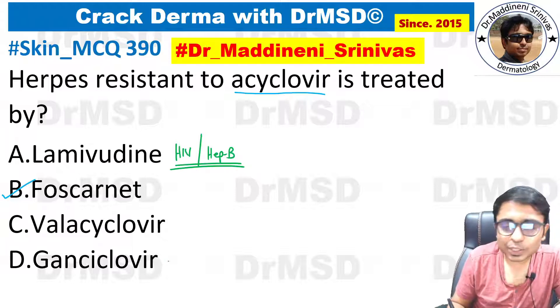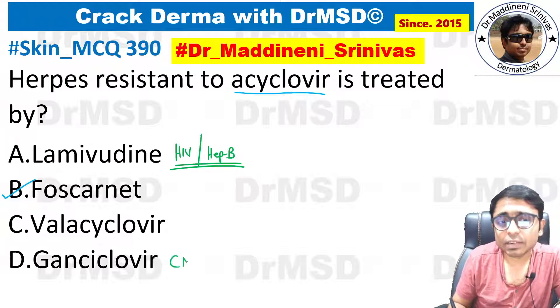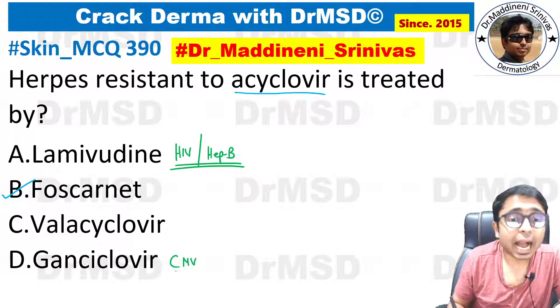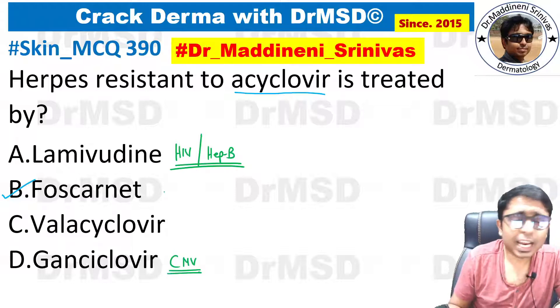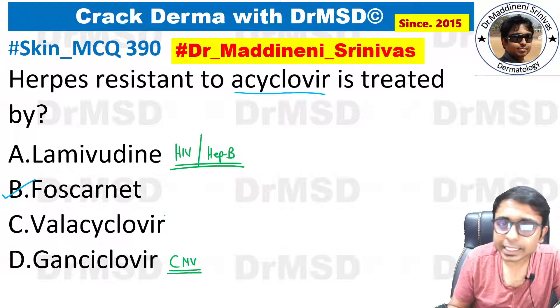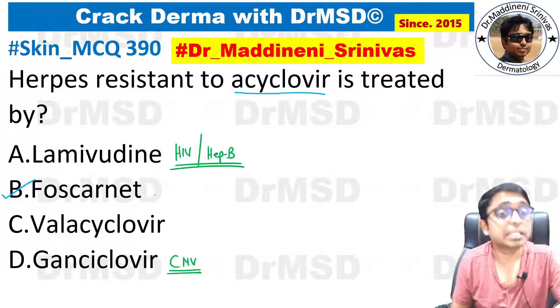Option D is also ruled out. Because ganciclovir has antiviral activity against cytomegalovirus but not herpes. So we are left with option B and C, and among the two options, Foscarnet is the answer.